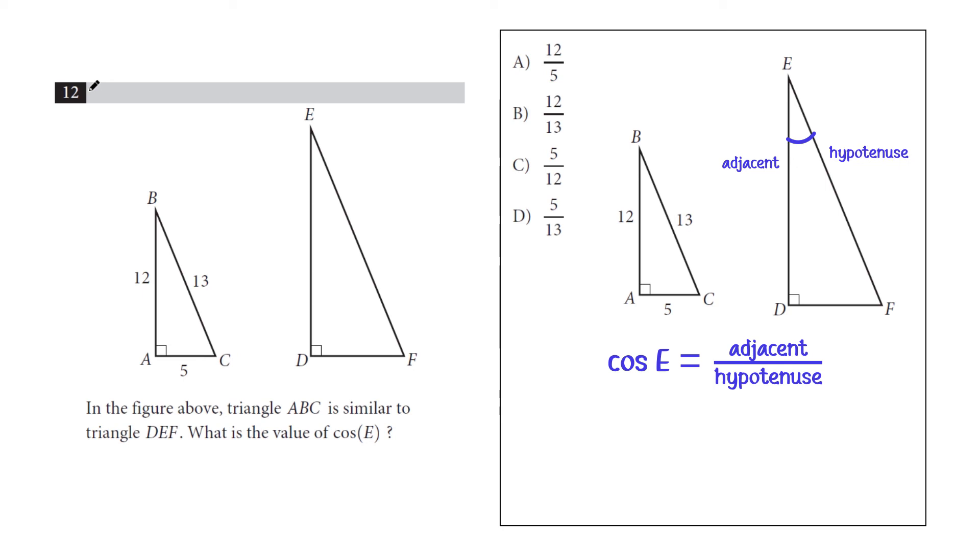Well, noting that these are similar, it means that the angles are the same, which means cosine E or angle E is equivalent to angle B. So we could just as well say what is cosine of B?